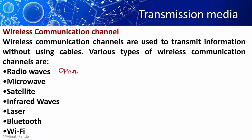In unguided media, air is the medium through which electromagnetic energy can flow easily. Various types of wireless communication channels are radio waves, microwaves, satellite, infrared waves, laser, Bluetooth, and Wi-Fi.